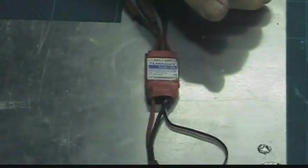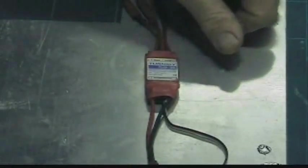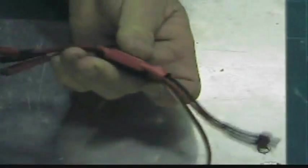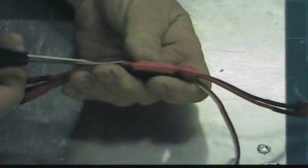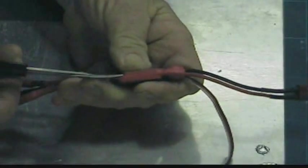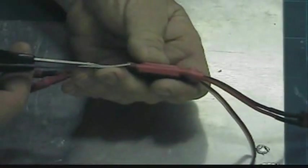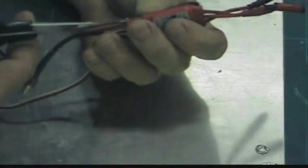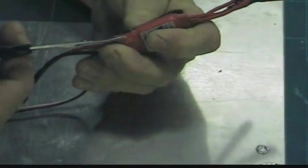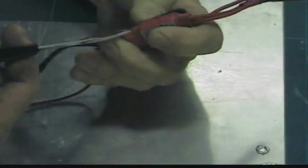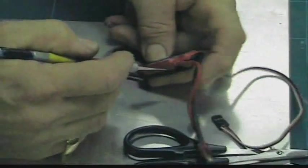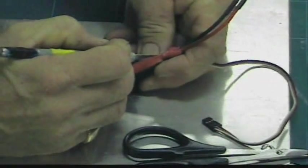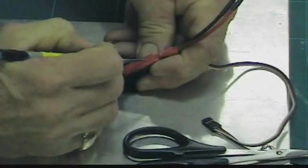This is a brand new Turnigy Plush 30 and I'm gonna cut the shrink wrap off, and then we're gonna coat it in conformal epoxy. Snipping it right up to the circuit board. I'm gonna take my scalpel and cut along the very edge.